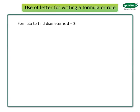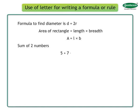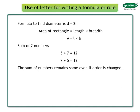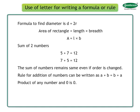We also use letters to find areas of rectangle and square. Area of rectangle equals length into breadth. We show the formula as A equals L into B. When we add two numbers, for example, 5 plus 7 equals to 12, or 7 plus 5 equals to 12, we see that the sum of numbers remain same even if the order of the numbers are changed. Thus, the rule can be written in short using A and B: A plus B equals to B plus A. Product of any number and 0 is 0. This can be written using letter A for any number: A into 0 equals to 0.